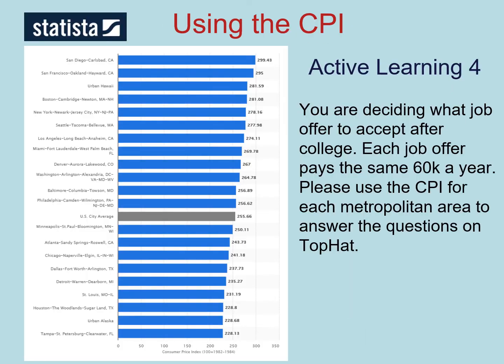Before we finish this lecture, let's use the CPI for a real-world problem you're likely to encounter in the near future. Suppose that you're deciding what job offer to accept after your college graduation, and each job offer pays the same $60,000 a year. Use the CPI for each metropolitan area found in the table on the left to answer questions on Top Hat. What matters for your consumption is your purchasing power, not your income.